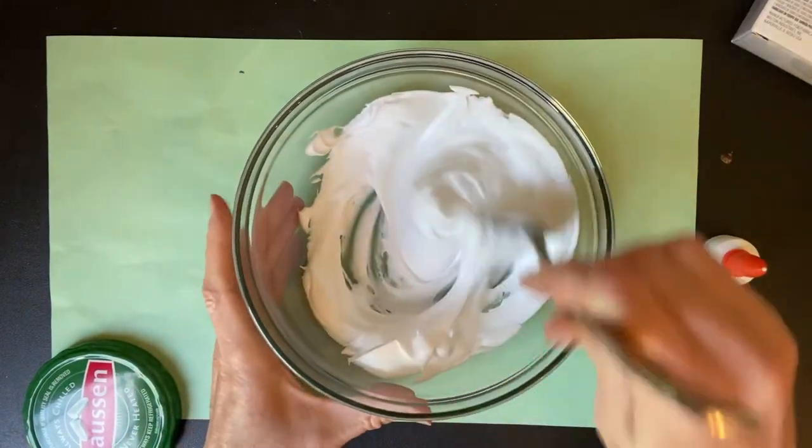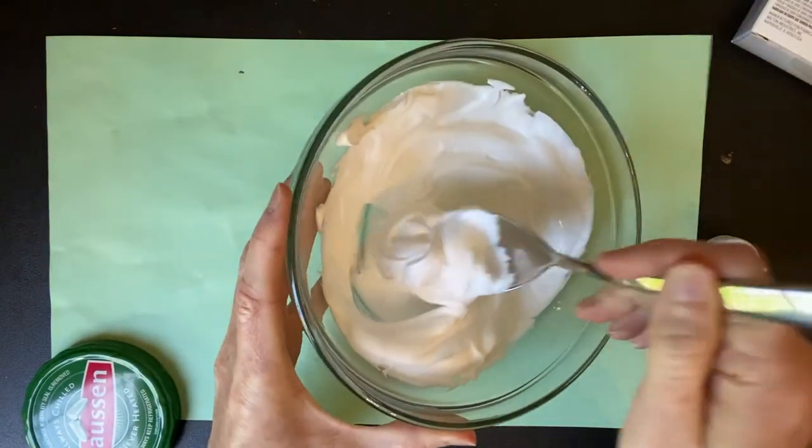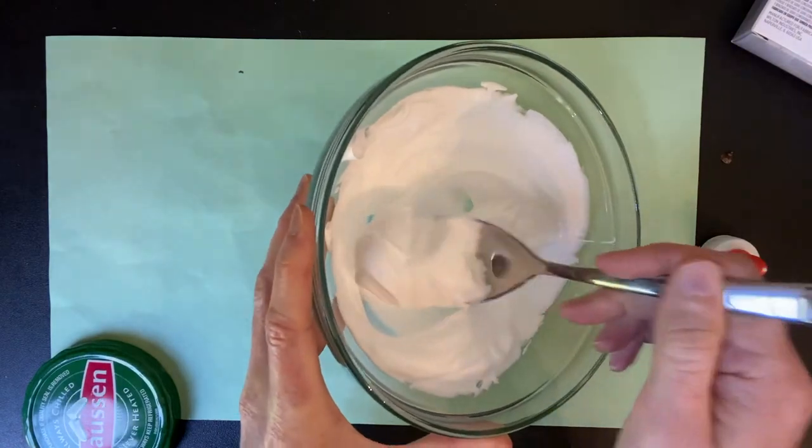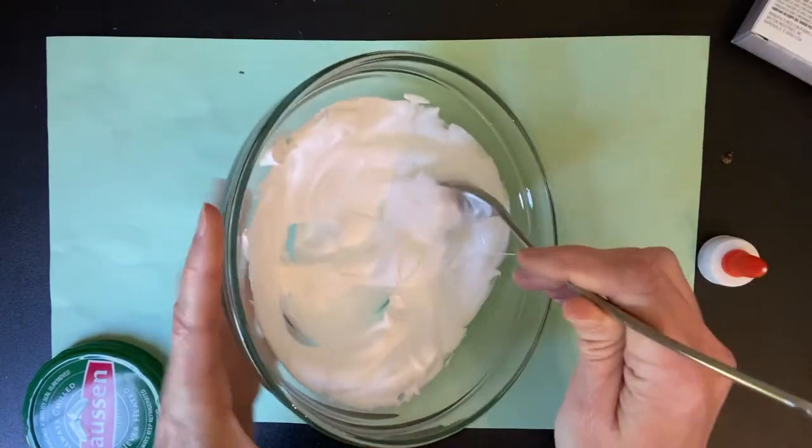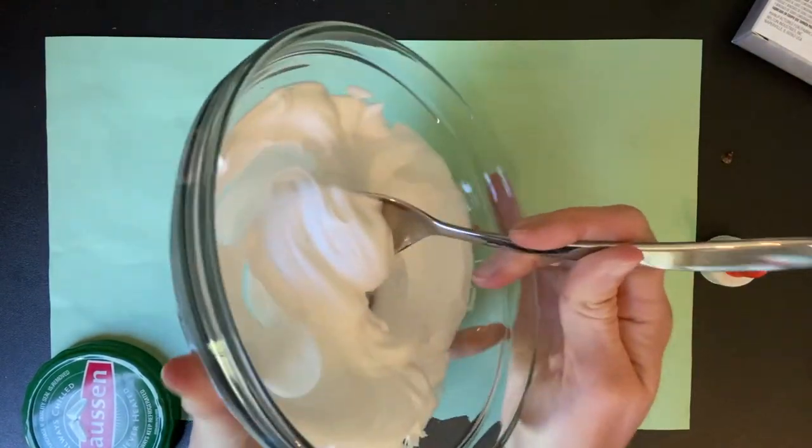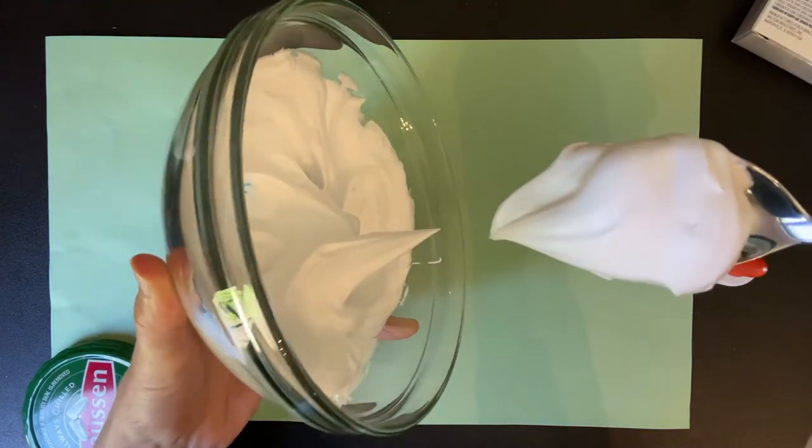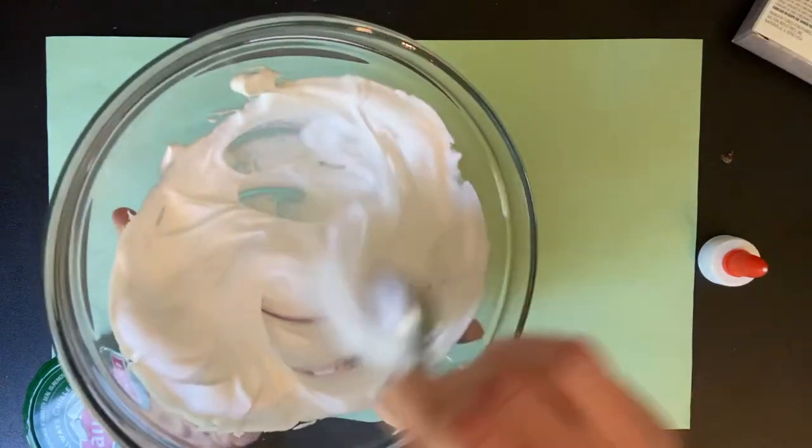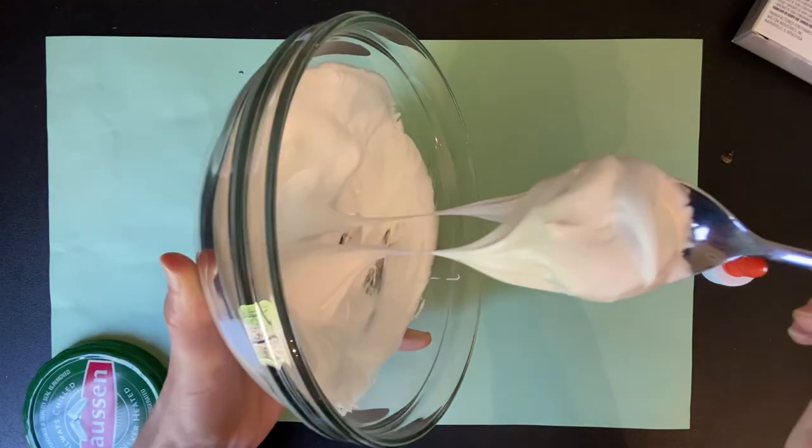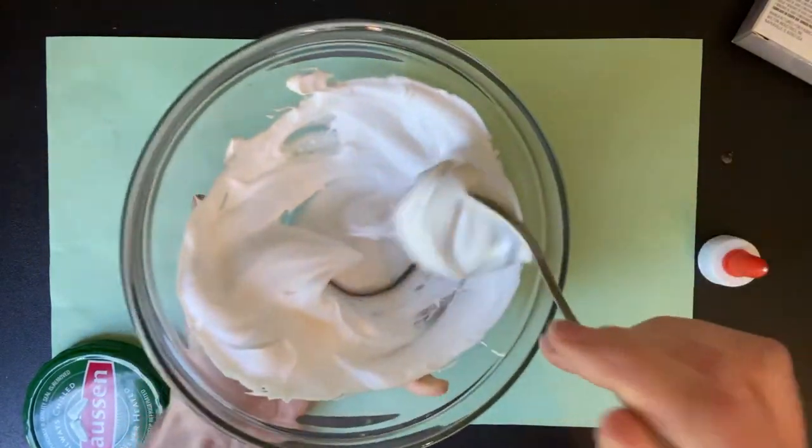And now I'm going to pull the spoon to see that it forms a stiff peak. And it does. So a stiff peak, boys and girls, I'm going to try to show you this maybe sideways. It means that the whipping cream, see that, is forming a peak like a mountain. And so you want to make sure it looks a little gooey like that.